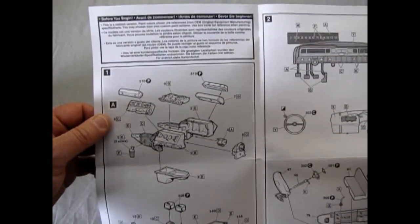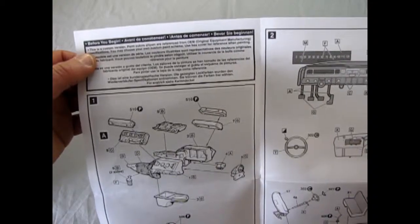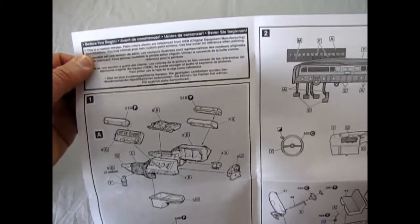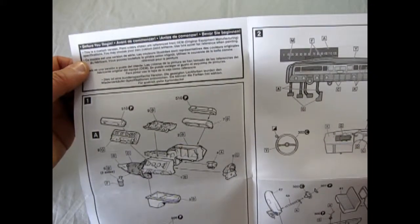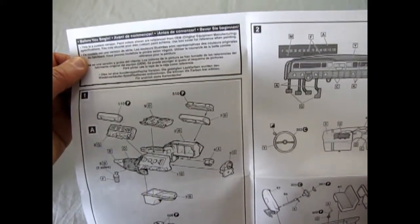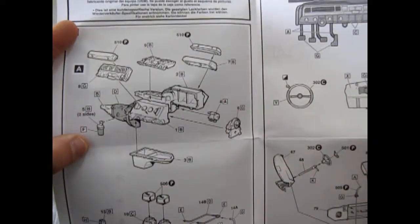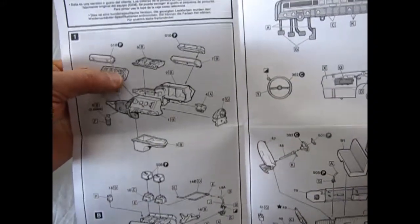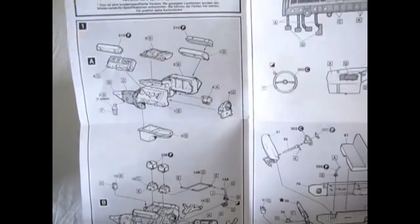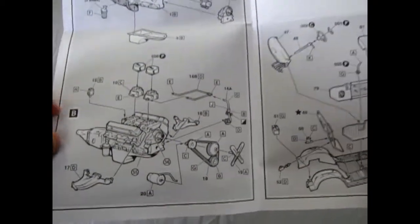So it says here, before you begin, this is a custom version. Paint color is shown a reference from OEM, original equipment manufacturing specifications. You may choose your own custom paint scheme. Use box cover for reference when painting. Okay, so there we've got our engine block again. The separate cylinder heads with valves on the top for you to cover up with your valve covers.